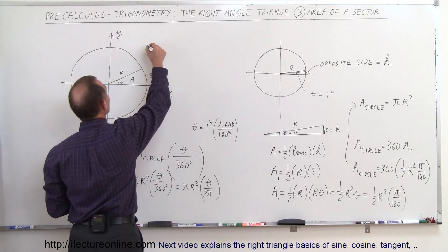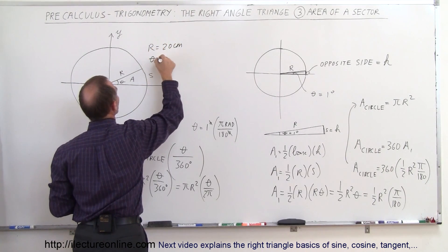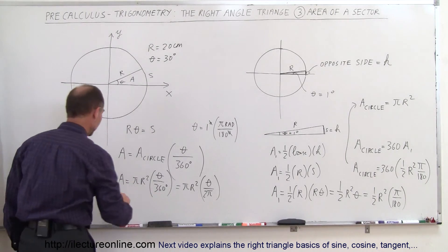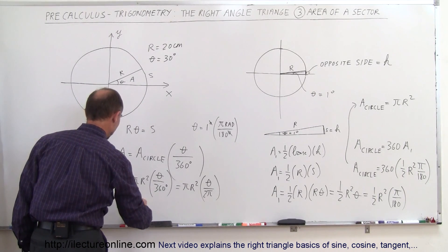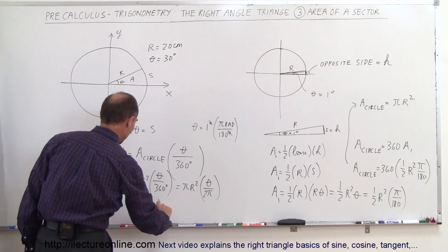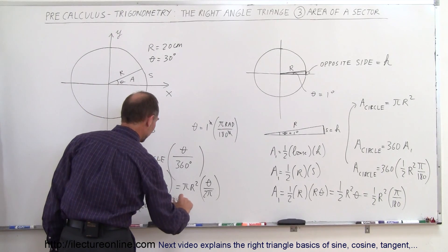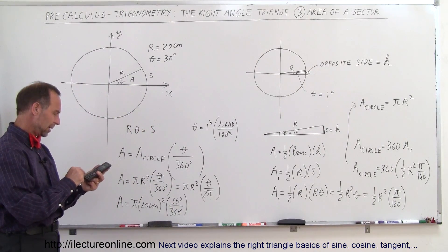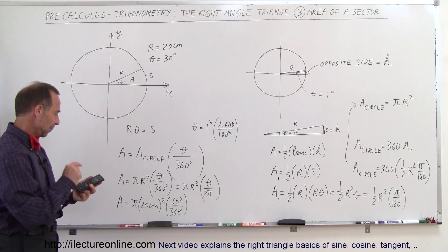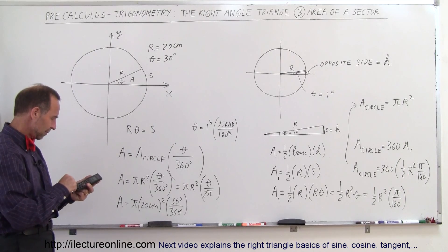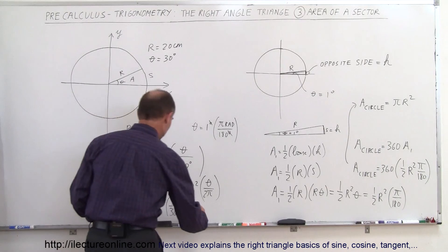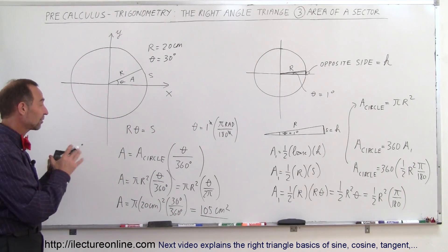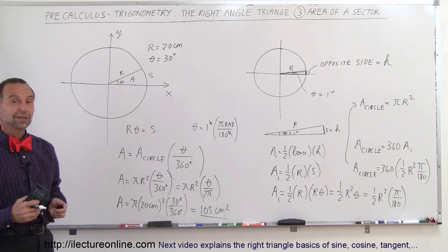For example, let's say the radius is 20 centimeters and the angle theta is 30 degrees. What is the area of that sector? We use the formula: area equals pi times 20 squared times 30 over 360. That gives us pi times 400 times one-twelfth. Calculating: 30 divided by 360 times 400 times pi equals 105 centimeters squared. That's how we find the area of a sector of a circle, and also how we derived the area of a circle in the first place.